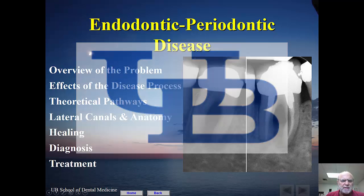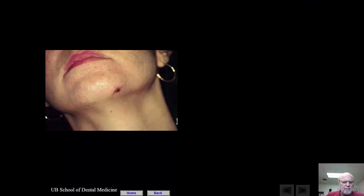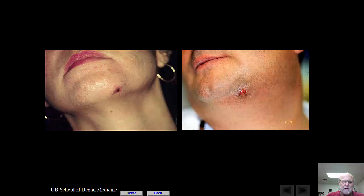Let's look now at the effects of the disease process. If you look at this patient, you can see a lesion in the chin area. And if you look at this patient, you also see a lesion in the chin area almost in the same spot. The reality is that one of these patients has endodontic disease and one has periodontal disease, both presenting clinically in much the same manner. You need to be able to distinguish between the two to assess what the proper treatment would be.